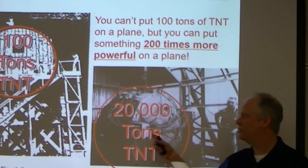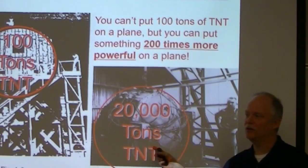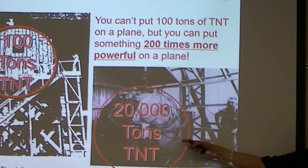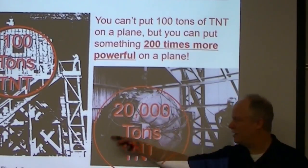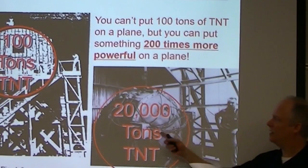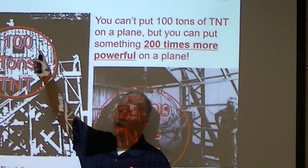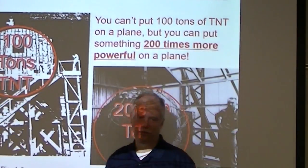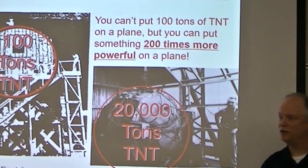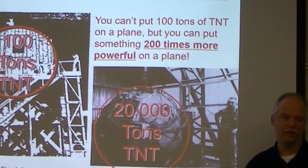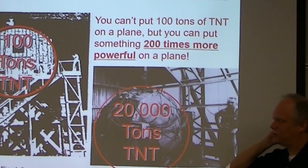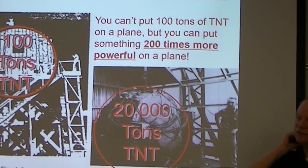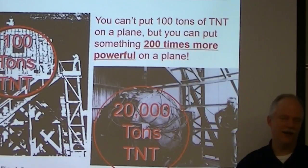But you can put something 200 times bigger on a plane. This is a man standing next to the Trinity device — that's the size of a man — and it's 200 times more powerful than that 100-ton TNT pile, which was the size of 13 people across. So that's the nuclear energy we're talking about. So they detonated this — that was the Trinity shot. You can still go there. It's still radioactive.